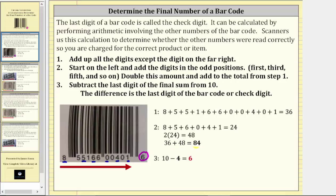For the last step, step three, we subtract the last digit of the final sum from 10. Looking at the final sum, the last digit is four, and therefore we subtract four from 10, which is equal to six, which does give us the check digit, or the rightmost digit of the barcode.